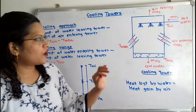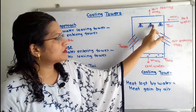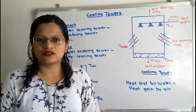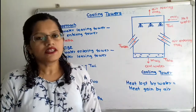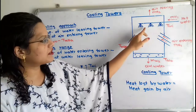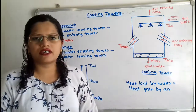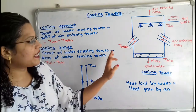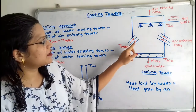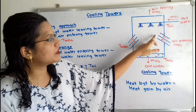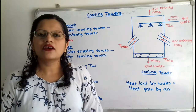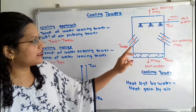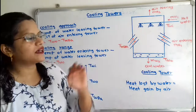Hot water enters the cooling tower and is spread through the nozzles. This water flows in a vertically downward direction. Air from the atmosphere enters inside the cooling tower and flows in the opposite direction of water, that is in the upward direction.